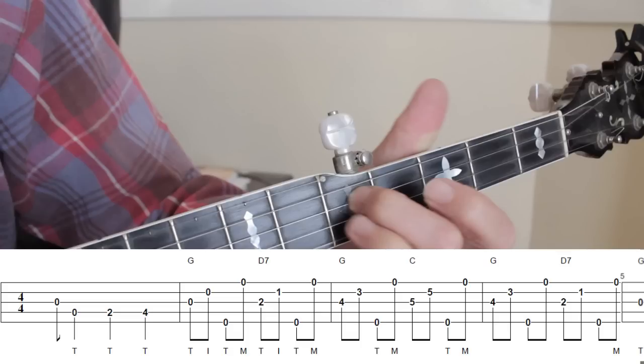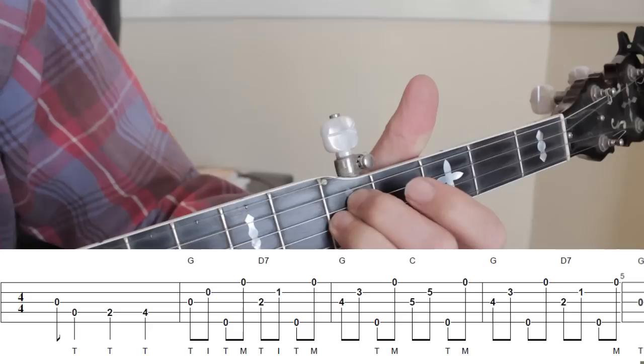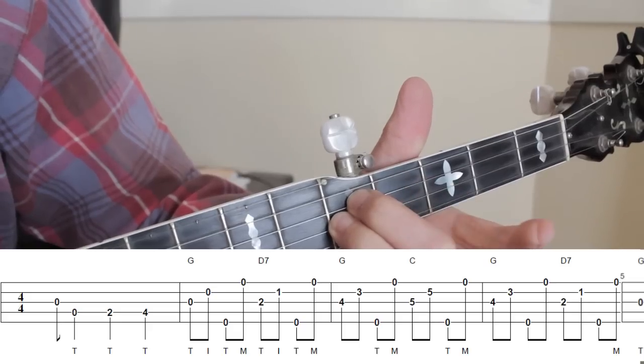The second half of bar 3 uses a partial C chord at the fifth fret. Use the fingering you see in the video.